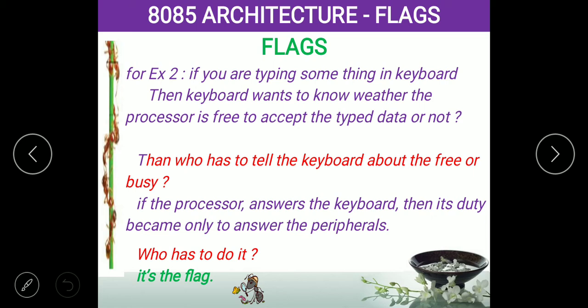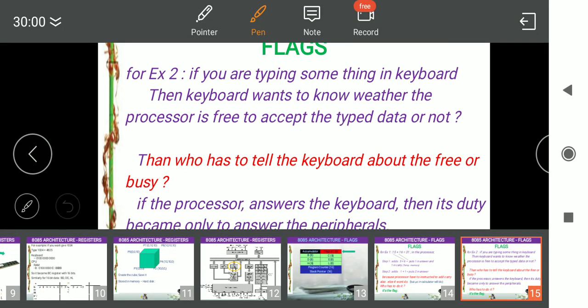Suppose you are typing something on the keyboard. If the processor is free, whatever you are typing goes to the processor and it will process it. But if the processor is busy, it will not accept the data from the keyboard. Similarly, if the processor is free, it will give a printout. If the printer is busy, even if you send the print command, it will not print.